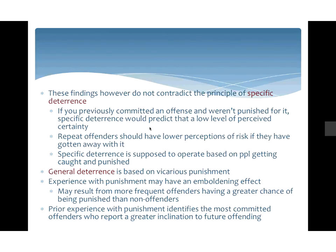These findings don't contradict the principle of specific deterrence. Repeat offenders should have a lower perception of risk if they've gotten away with the offense before. Specific deterrence operates based on getting caught and getting punished — if someone has committed an offense many times without being caught, there's no specific deterrent effect. General deterrence is based on vicarious punishment: you see other people being punished, like seeing a sibling punished, and you learn from that. Experience with punishment might actually embolden somebody.